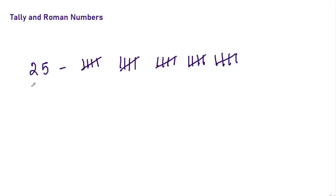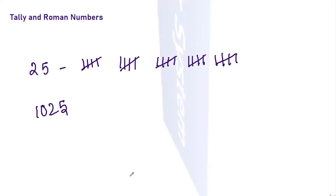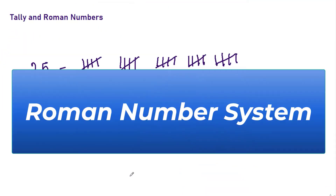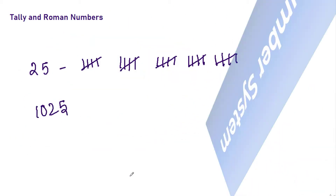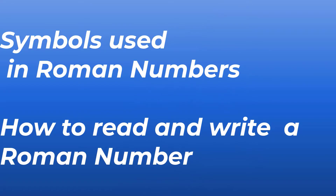So, in order to overcome from these things, they found the Roman number system. In this Roman number system, instead of this way of representation, they changed the way with alphabets and called them symbols. In the next video, we will see what are the symbols used in Roman numbers and how to process everything.